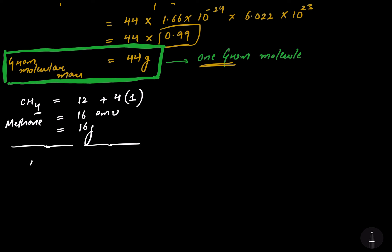Now let's take the example of ammonia, NH3. The atomic weight of nitrogen is 14, and that of hydrogen is 1. Since there are 3 hydrogen atoms, we multiply 1 by 3. So 14 plus 3 comes out to be 17 AMU, and the gram molecular mass is 17 grams.